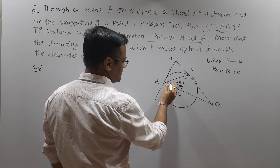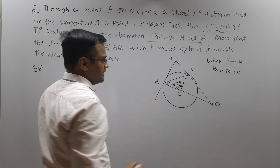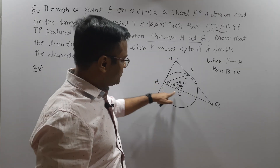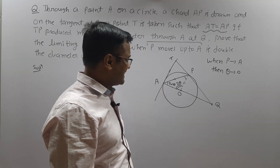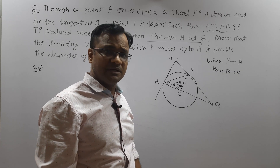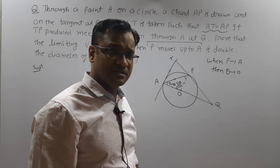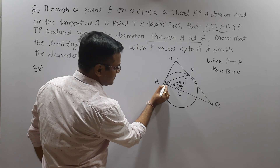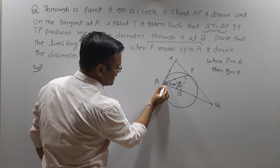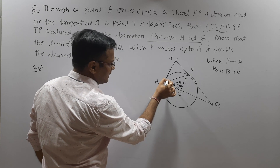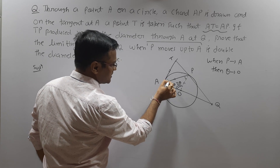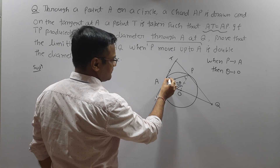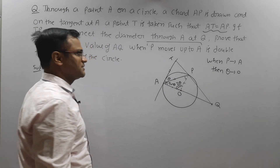AT is a tangent and AO is a radius, and we know that the tangent is perpendicular to the radius through the point of contact. So this whole angle — the angle between the tangent AT and the radius AO — is 90 degrees. Therefore the remaining angle TAP is θ.